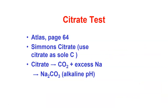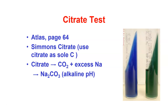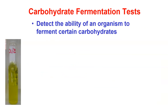We also have the citrate test, done on Simmons citrate agar, which tests whether the organism can use citrate as the sole source of carbon. The citrate is broken down into carbon dioxide; the excess sodium present in the media combines with the CO₂ to create sodium carbonate, which has an alkaline pH. As the pH increases, we develop a blue color for a positive result. The original color of the medium is green, so the blue color is the very distinctive positive result for citrate.